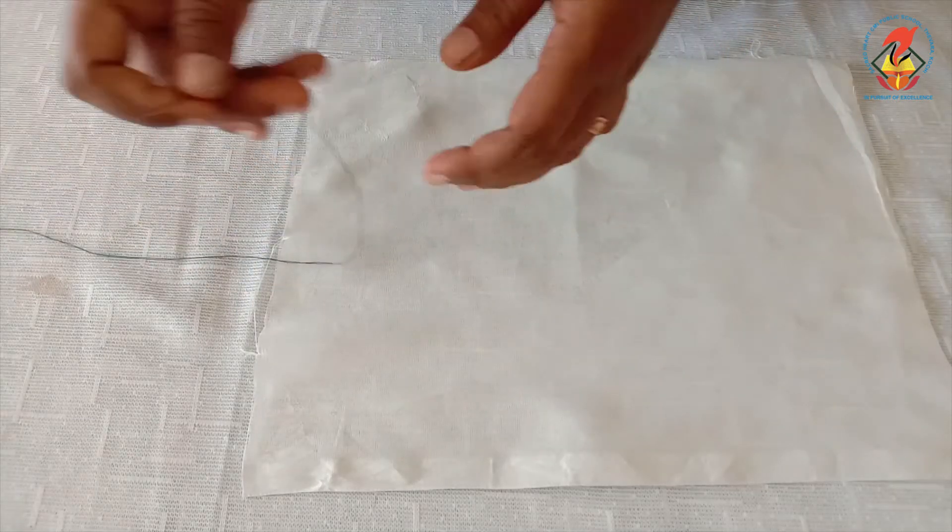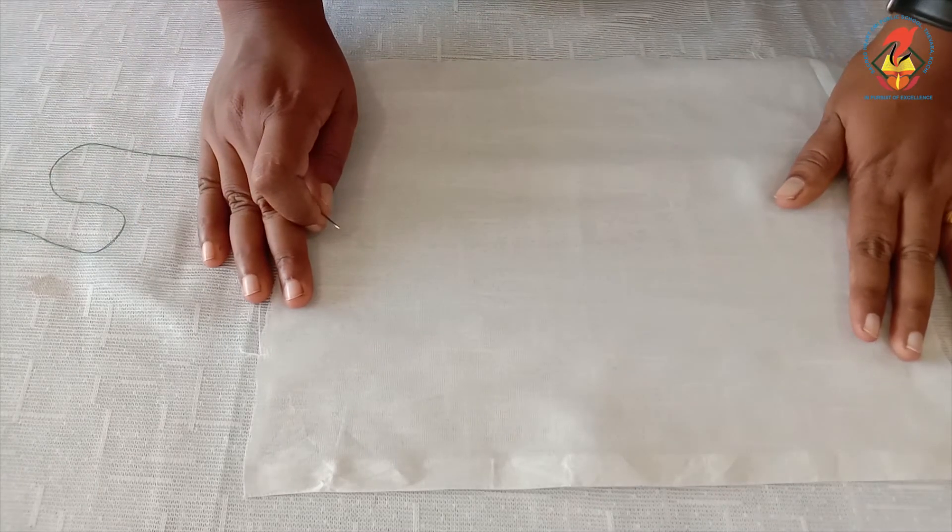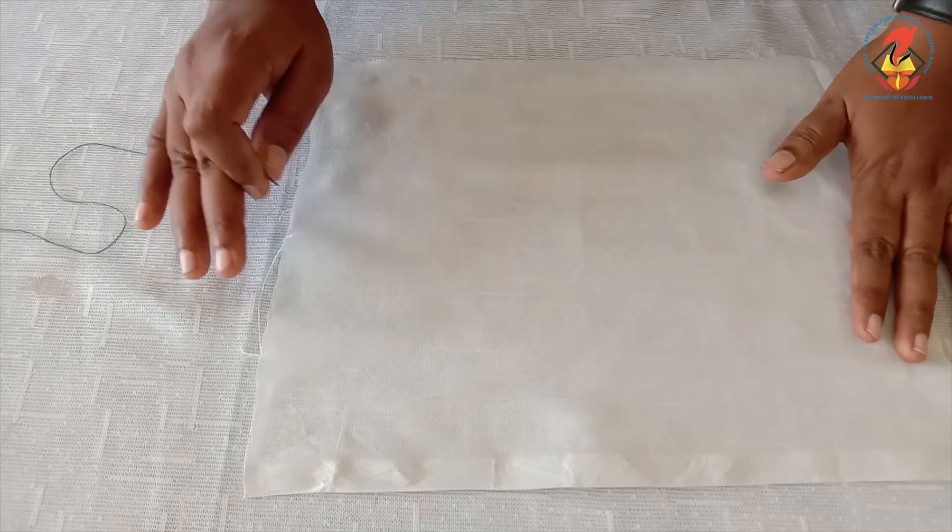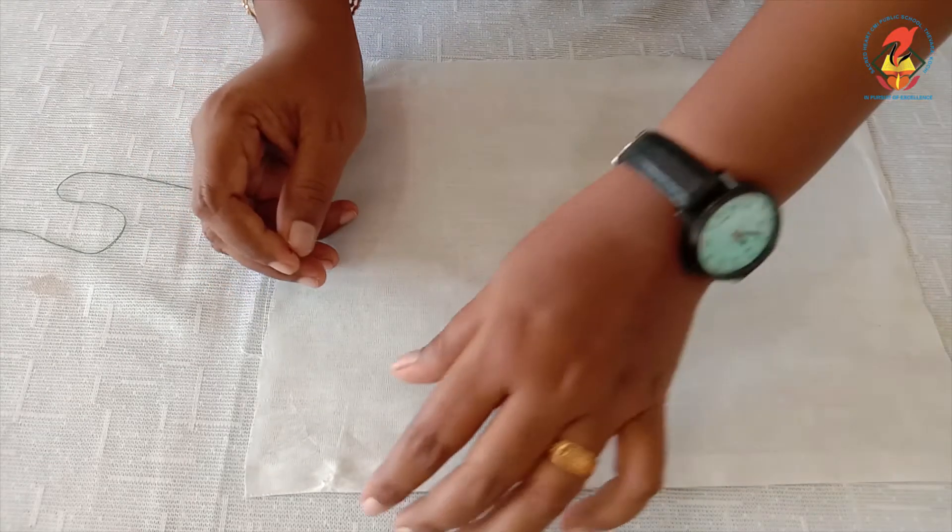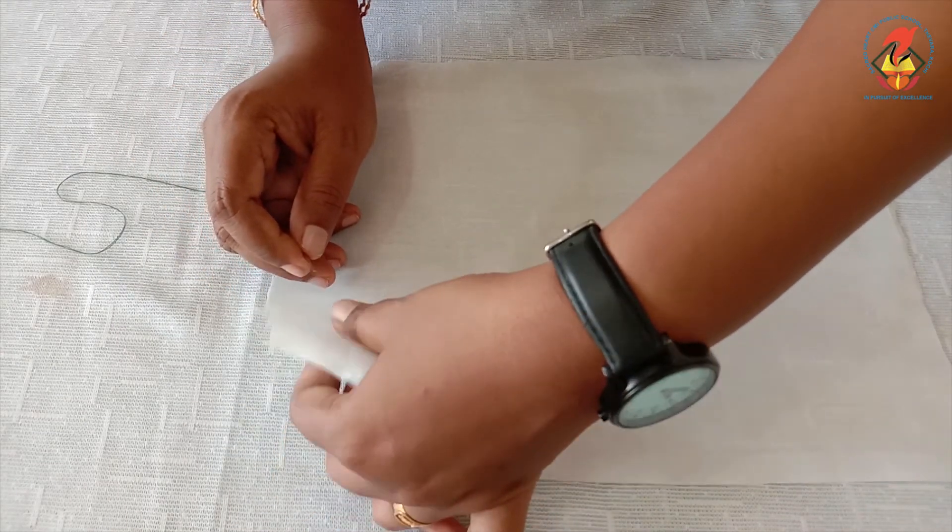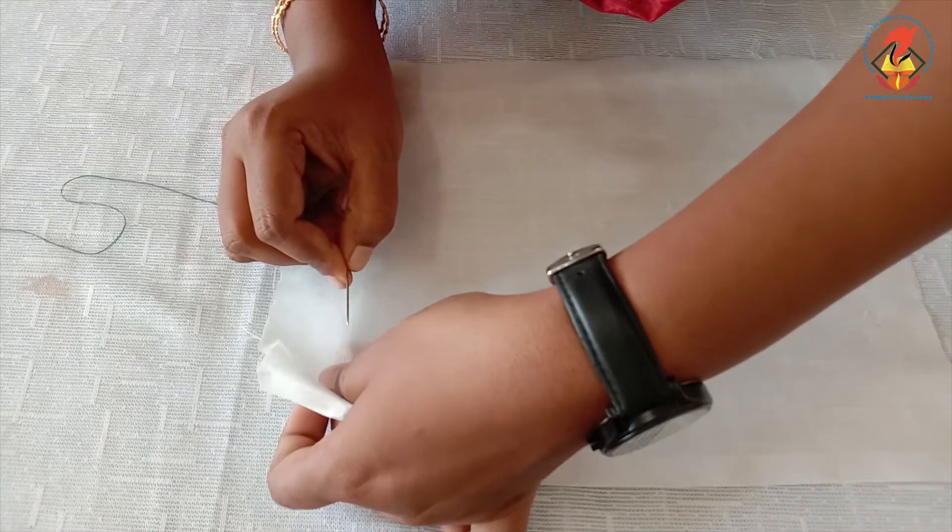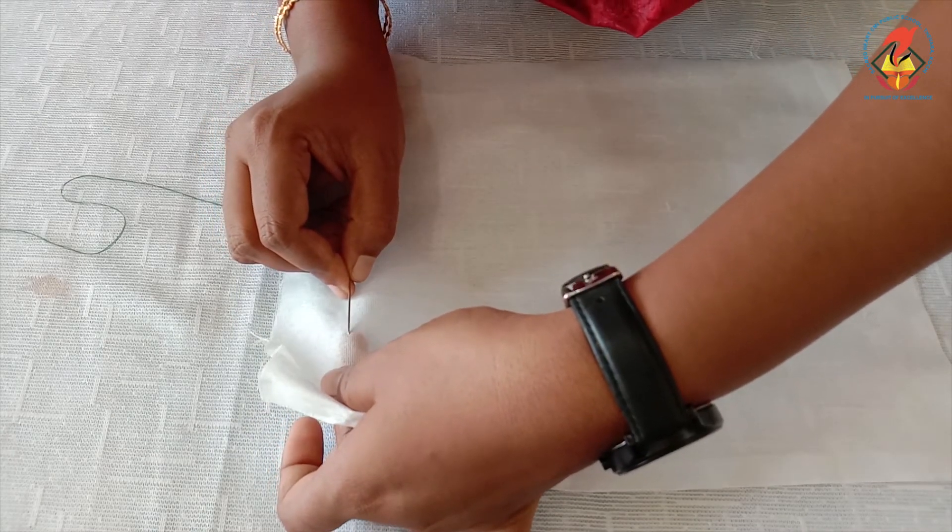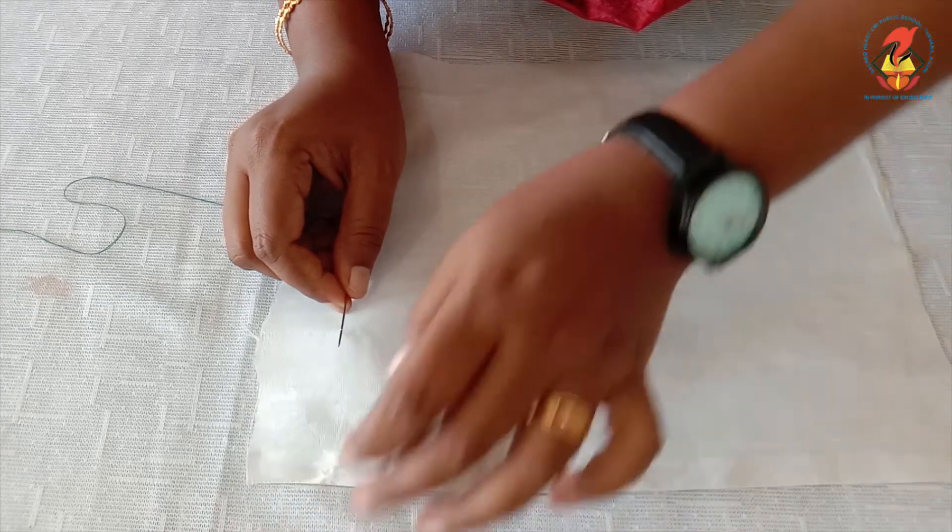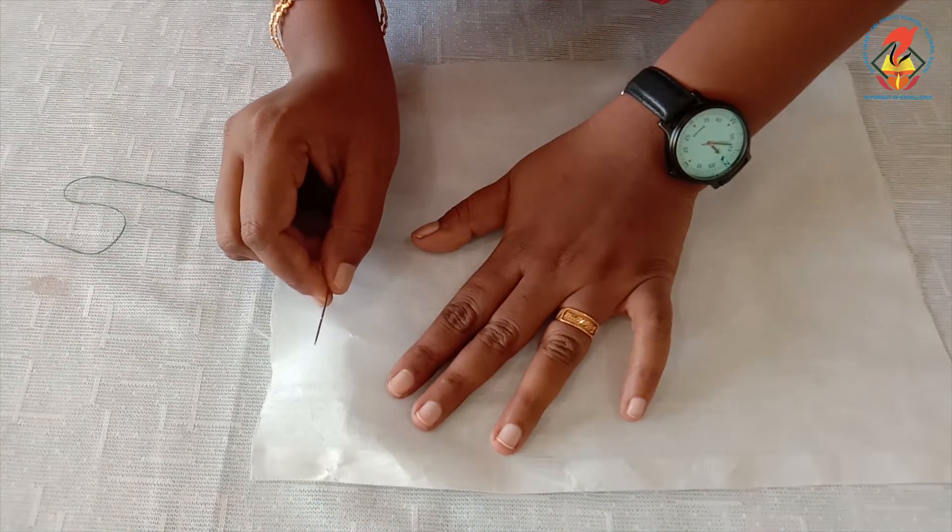Spread the cloth on the table. Using the needle, grab one thread in the direction where we want to pull the thread. You have to grab one thread.